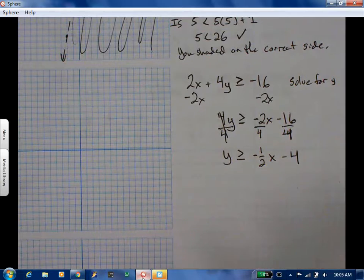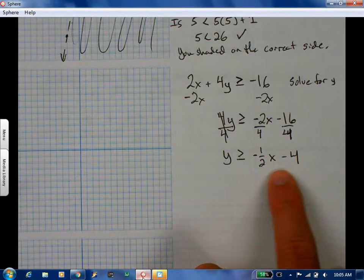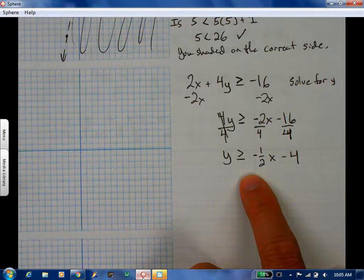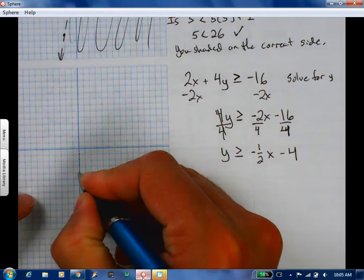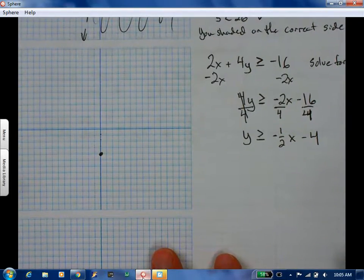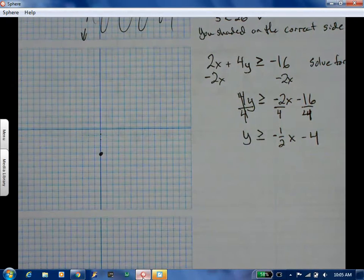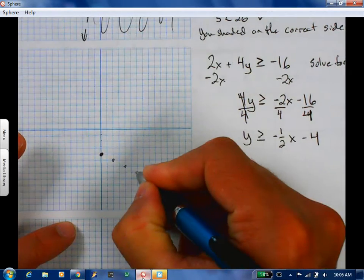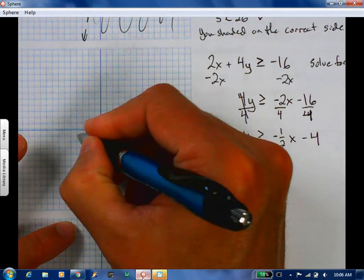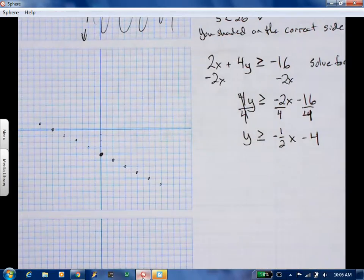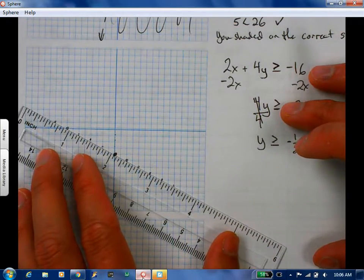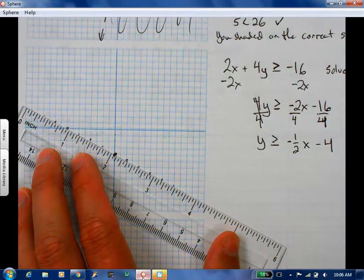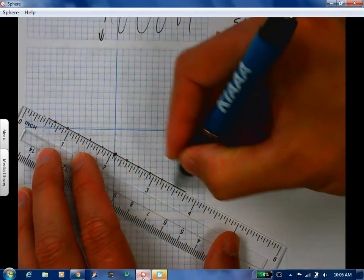Where are you going to start? The y intercept is negative four. Slope is negative one-half. Solid or dashed? Solid. I think you did a slope of two, not one-half. Rise over run.